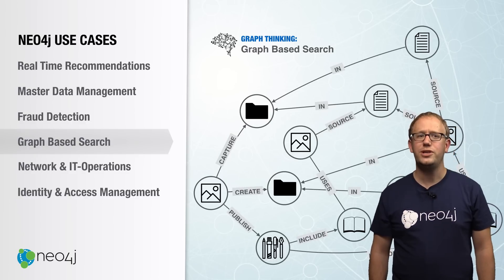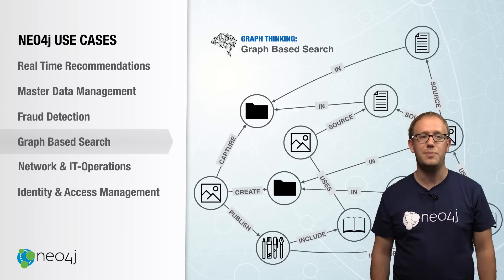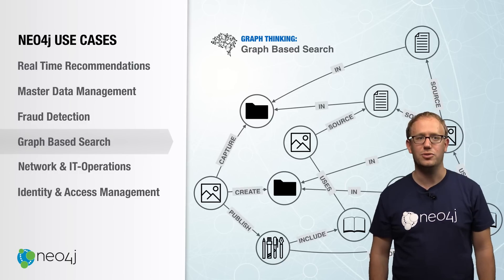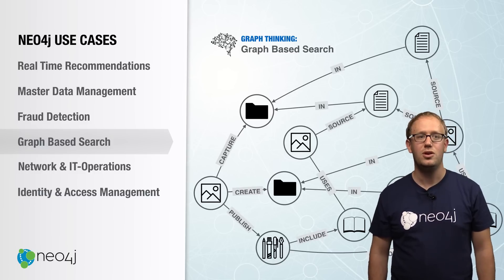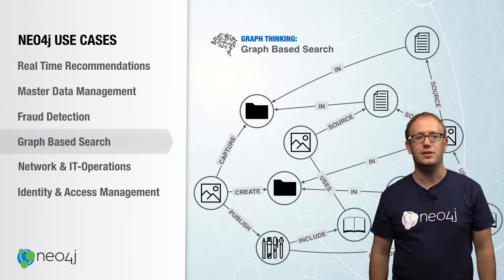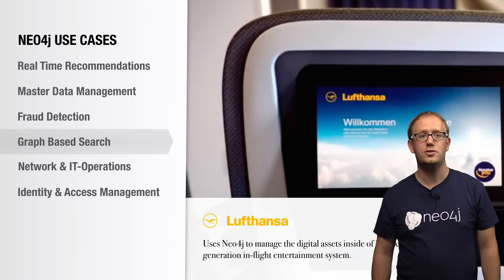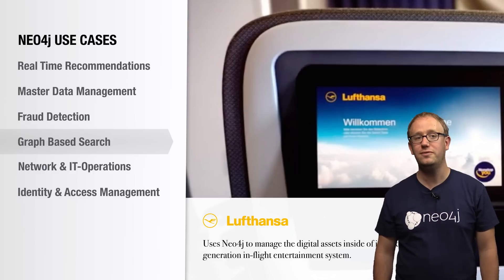Graph-based search. Neo4j originated from a graph-based search challenge which the founders had back in the year 2000. They were building a content management system, trying to recommend photos based not only on the entered search terms, but on related terms. Imagine you're searching for animals — you want to see all images tagged with 'animal', but you also want to see all images tagged with 'mammal', 'fish', or 'dog'. This will give you better search results, resulting in increased engagement with the platform. The language used to describe objects in the real world is best represented as a graph. When trying to represent this graph in a relational database, the founders encountered performance problems and started building the first Neo4j prototype. Lufthansa is one of our customers using Neo4j for graph-based search; their custom-tailored asset management application powers their in-flight entertainment system.